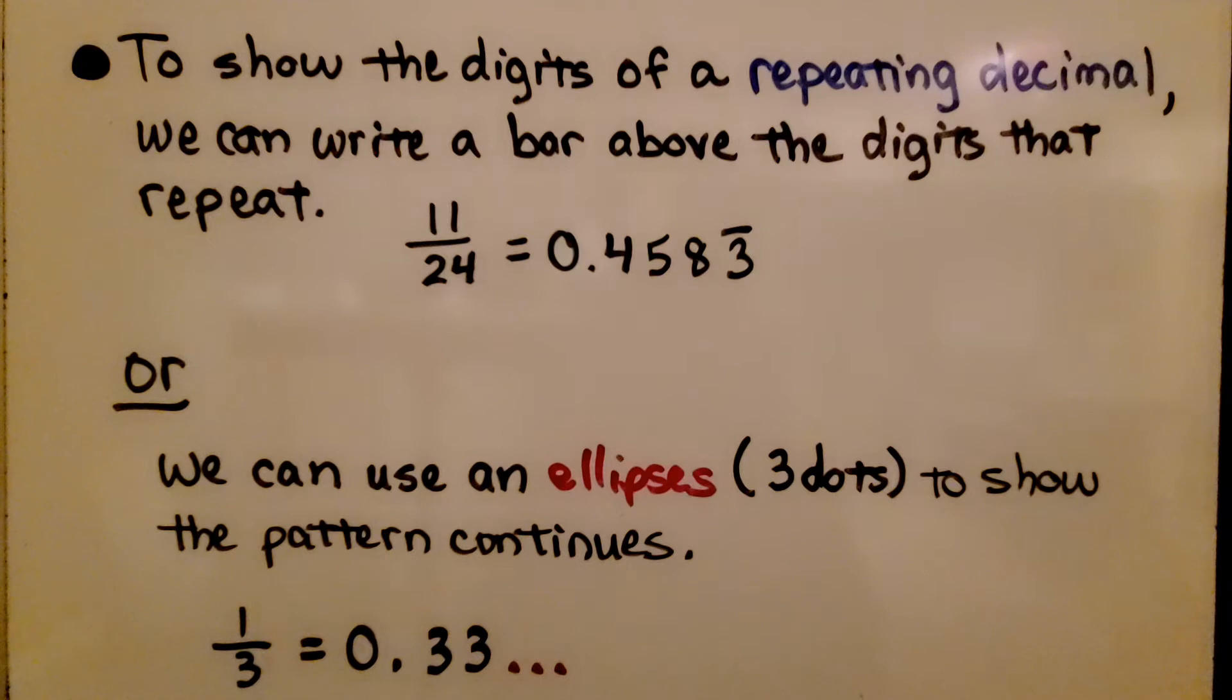Or we can use an ellipsis, that's 3 dots, to show the pattern continues. 1/3 is equal to 0.3 and then the 3 continues, so we can put an ellipsis there to show that it continues.